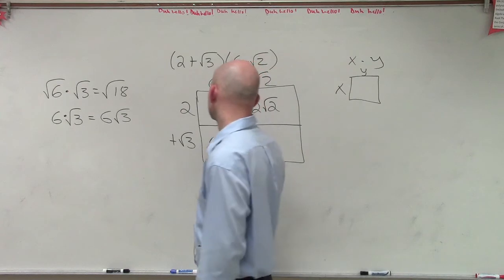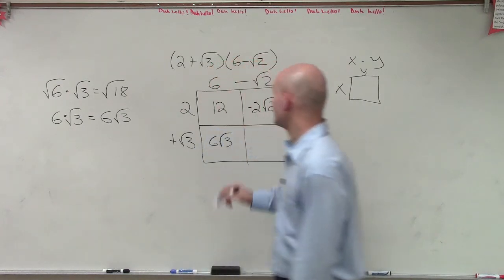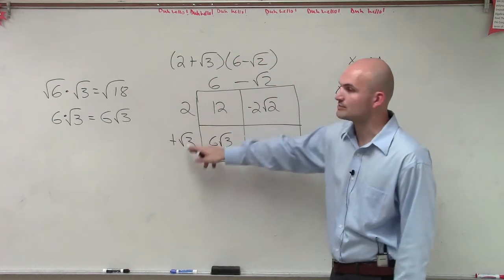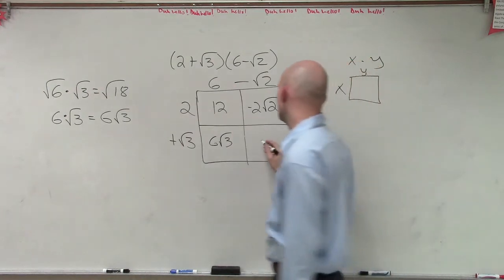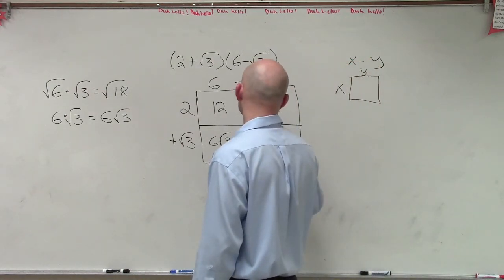So 6 times square root of 3, just give me one second, is right there. And then negative square root of 2 times square root of 3, since they're both under a root, that becomes negative square root of 6.